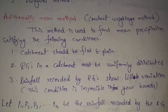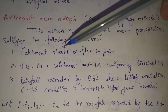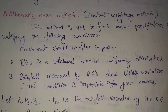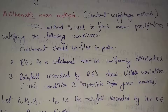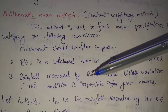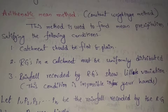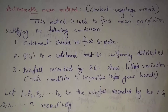This method is used when rainfall recorded by rain gauges shows little variation — small variation. When this condition is satisfied, this arithmetic mean method can be applied.